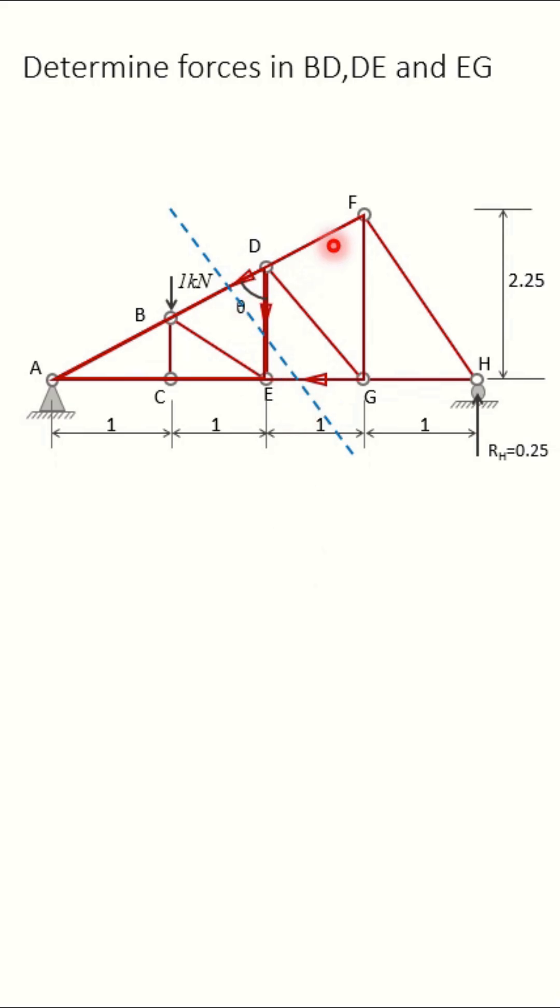Take this angle as theta. This angle will also be theta. Determine this angle theta. Tan theta equals 3 divided by 2.25. Theta equals 53 degrees.